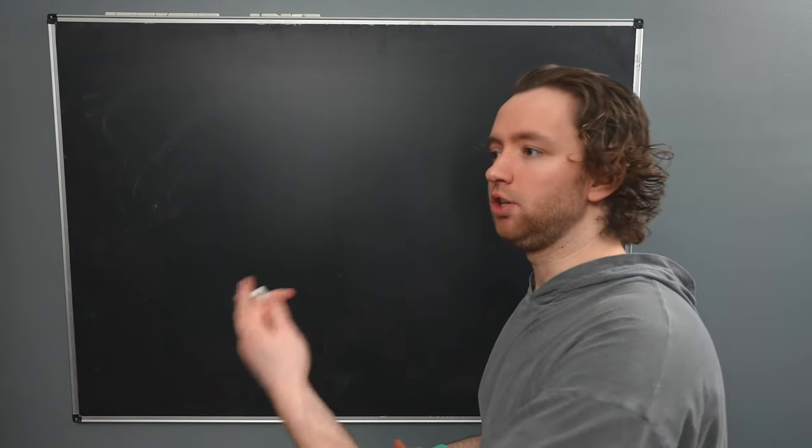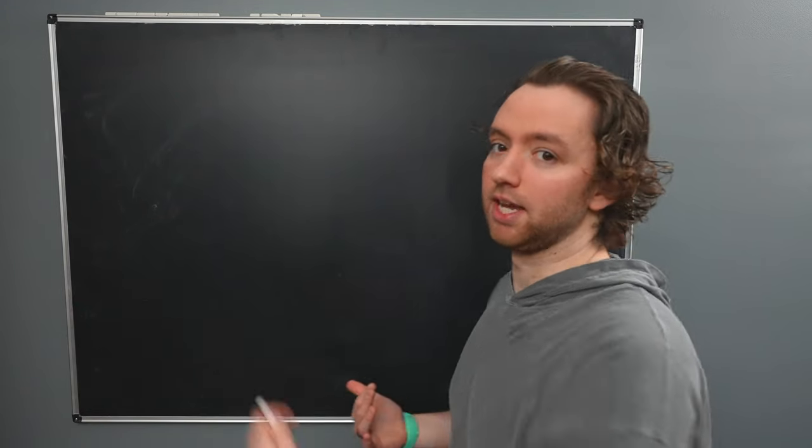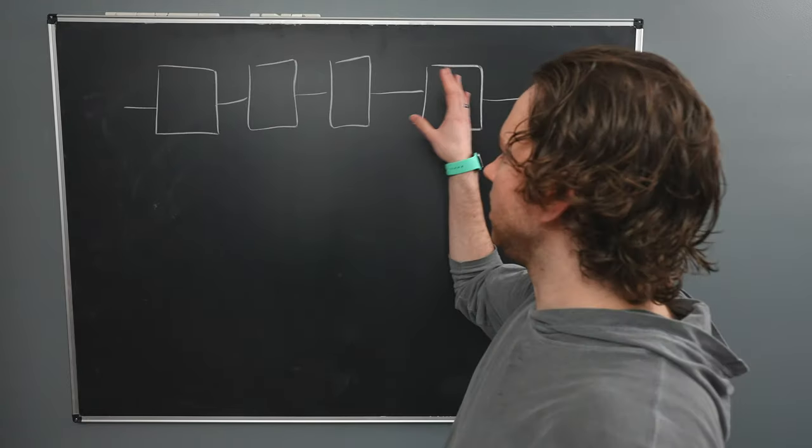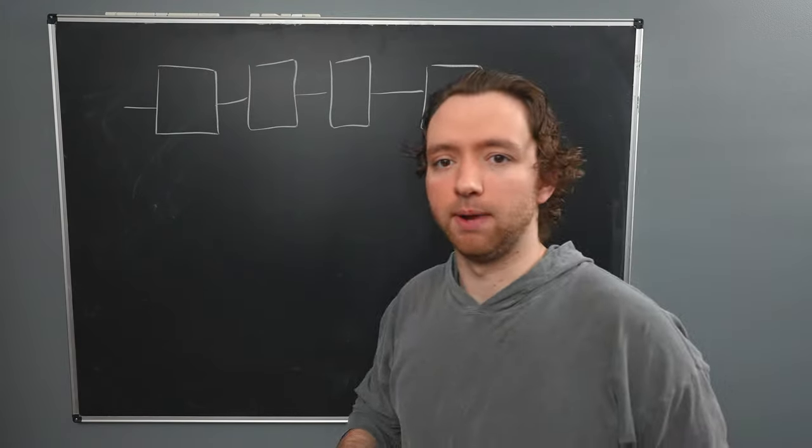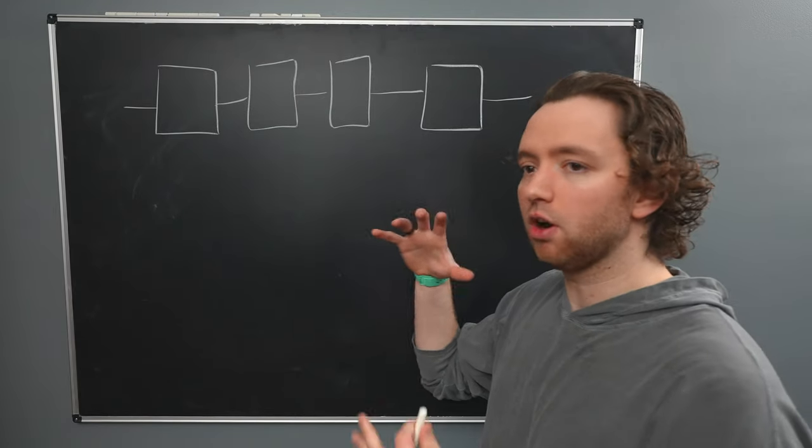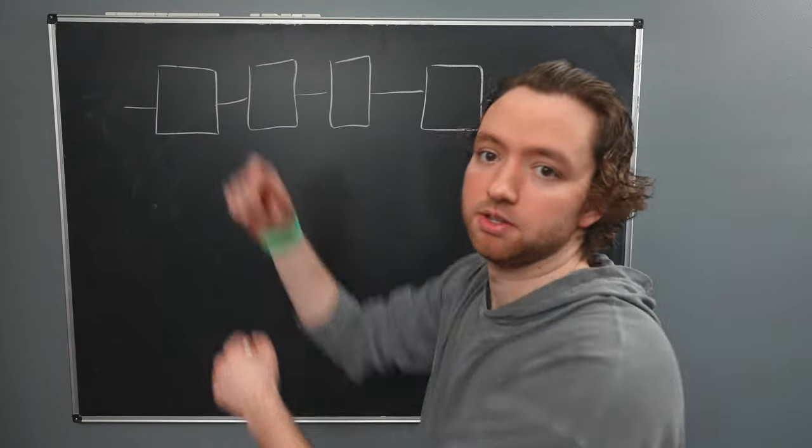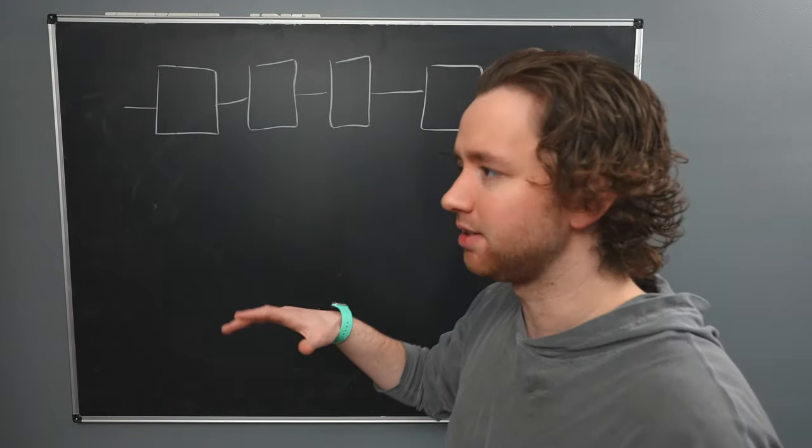So once you understand why Bitcoin is a thing, what problems it's trying to solve, peer-to-peer payments online, you can start to think about what the data structure actually looks like. And it's literally a chain of blocks. Each one of these blocks, you can think of them as commits. Like here are the transactions we're adding to the blockchain. Boom, these ones. We wait a little bit, around 10 minutes in Bitcoin's case. Boom, we're adding these ones.